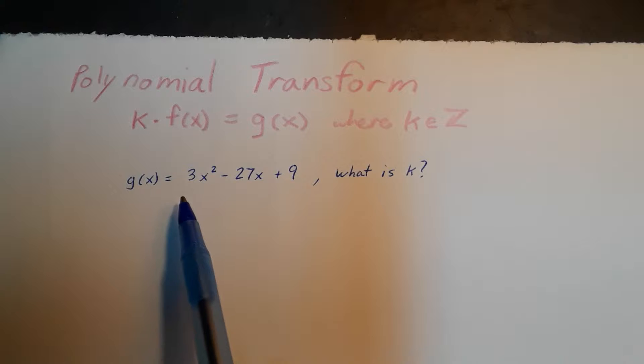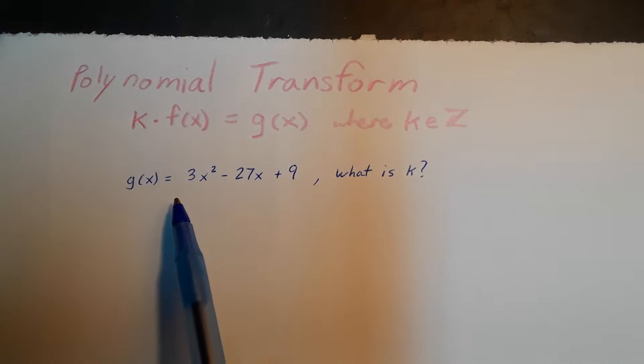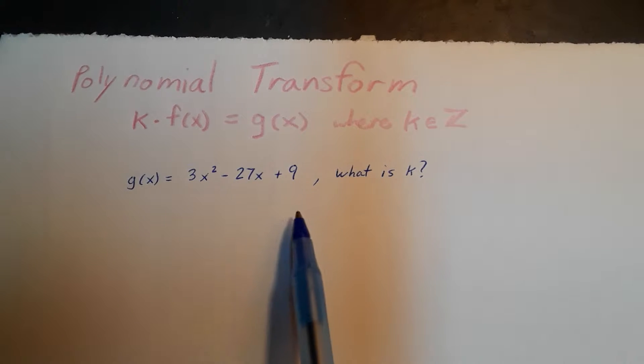Essentially what we want to look for is something that we can factor out of this, so that we would have an integer times some polynomial.